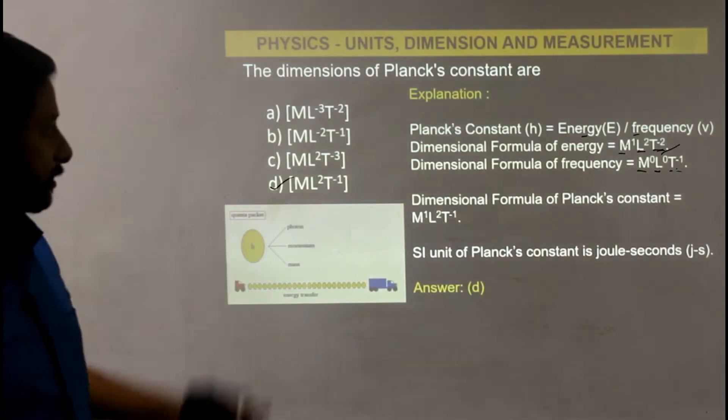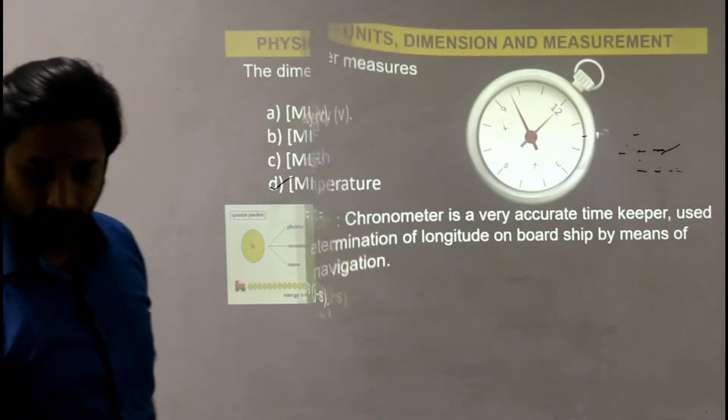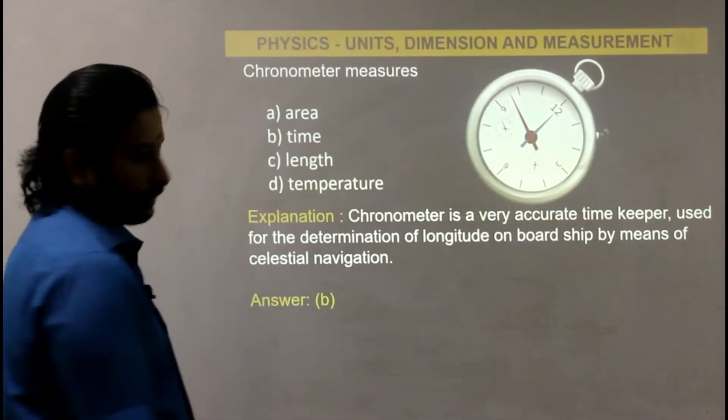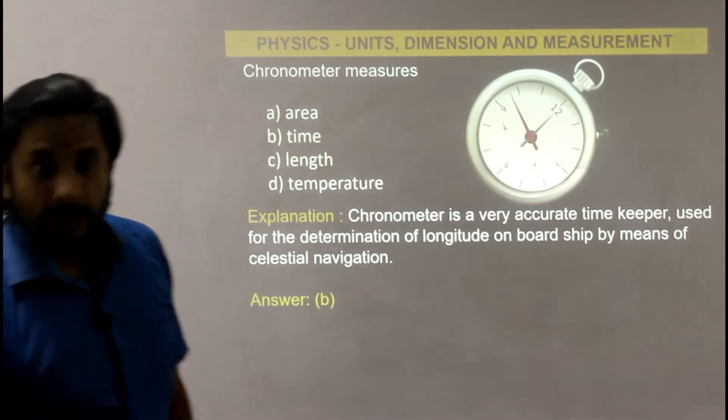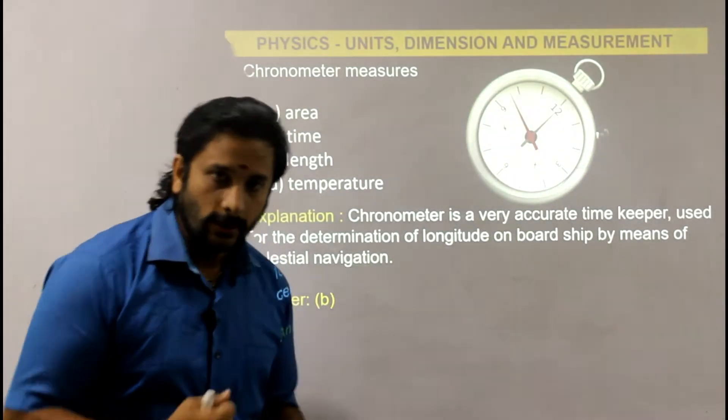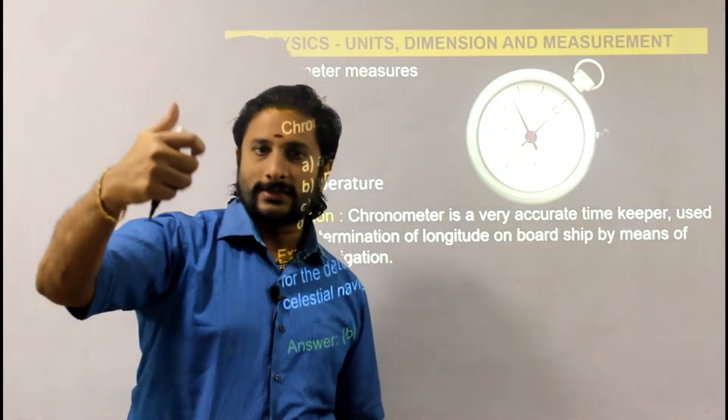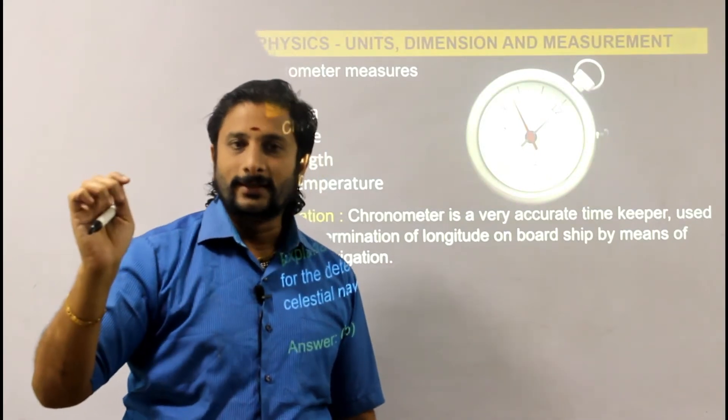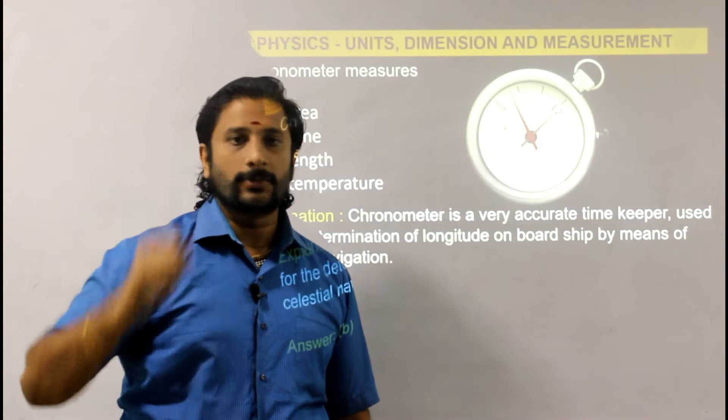Next question: chronometer. A chronometer is a device used to measure speed. Speed calculation is done by chronometer.